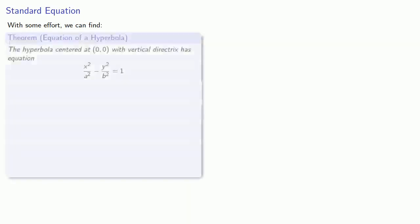With some effort and a lot of algebra, we can find the following. The hyperbola centered at (0,0) with vertical directrix has equation x²/a² - y²/b² = 1, with vertices at (a,0) and (-a,0), and foci at (c,0) and (-c,0), where a² + b² = c².